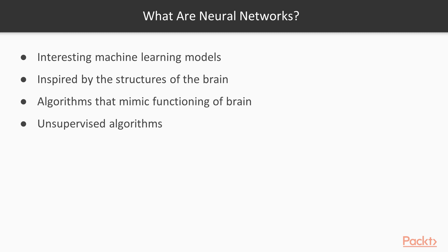Neural Networks are one of the most interesting machine learning models. They are inspired by the structures of the brain, and are algorithms that mimic the functioning of the brain. They are unsupervised algorithms, which means that we do not always know what the output should be.